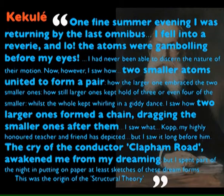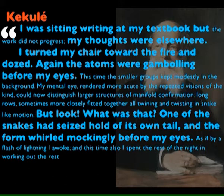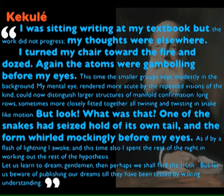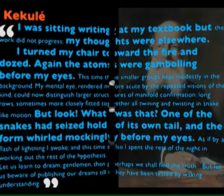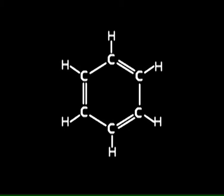The numbers didn't work for benzene — far too much carbon and not enough hydrogen. Until one day: 'I was sitting writing in my textbook, but my thoughts were elsewhere. I turned my chair towards the fire and dozed. Again atoms were gambling before my eyes — one of the snakes had seized hold of its own tail and the form whirled mockingly.' This was the form of the benzene ring. What he saw was the Ouroboros — the form of the Midgard Serpent in Norse mythology, the snake which encircles the world and at Ragnarök destroys it. All from a dream.